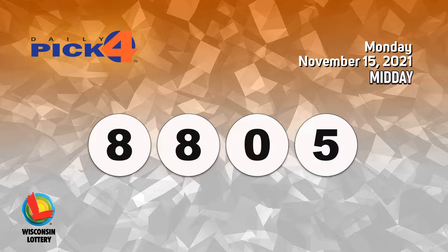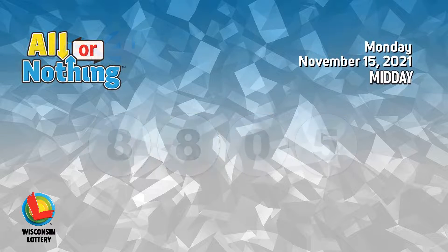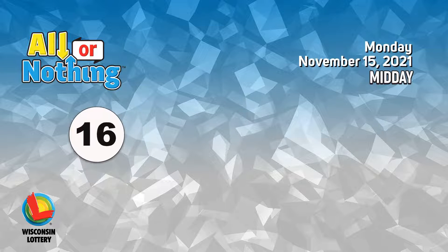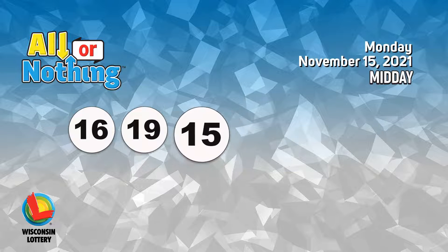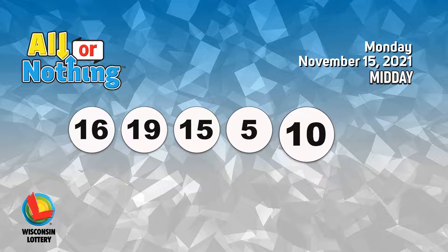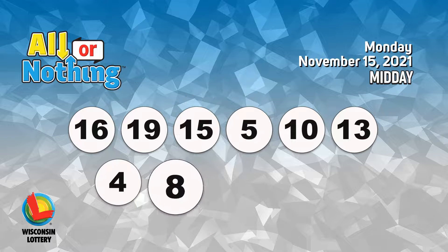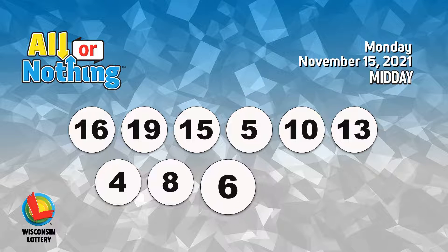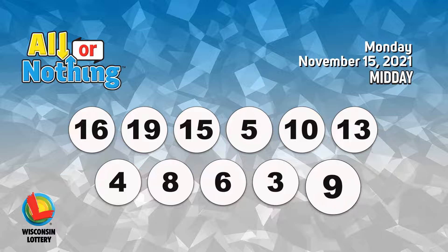The all or nothing numbers are sixteen, nineteen, fifteen, five, ten, thirteen, four, eight, six, three, nine.